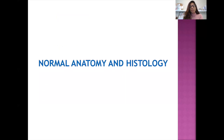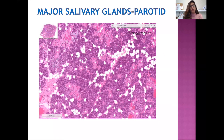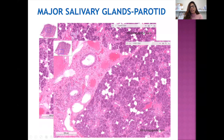I would like to start with normal anatomy and histology. Beginning with the major salivary glands, we'll start with the parotid. The parotid is in the pre-auricular area, bounded by the sternocleidomastoid posteriorly, the masseter anteriorly, and superiorly by the zygomatic arch. Stensen's duct opens into the buccal mucosa. The parotid is predominantly serous acini, with rare mucous acini still present.